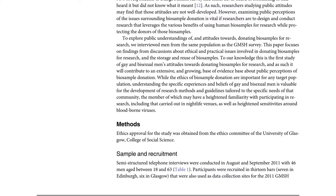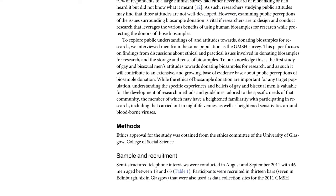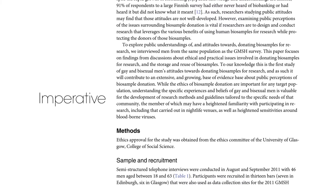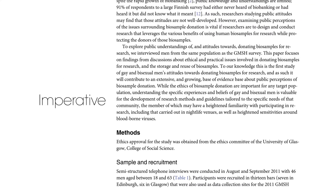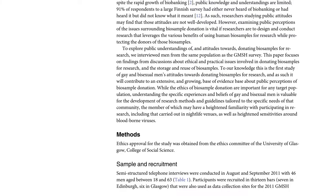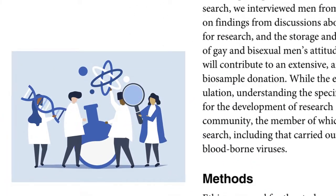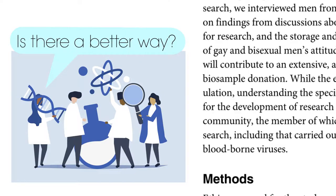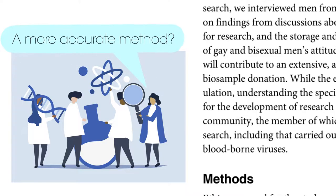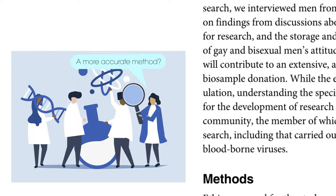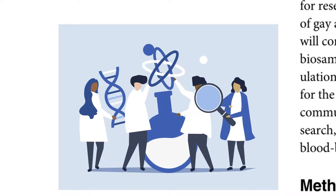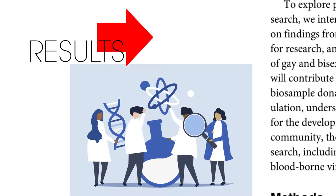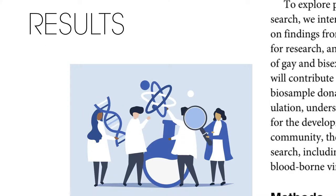The method is described in enough detail so someone could repeat the same procedure. The method is always written in the imperative, as are any instructions. It's important to allow other scientists to critique the method — for example, is there a better way the investigation could have been carried out? Could a more accurate method have been used? It also allows other scientists to carry out the experiment and compare their results. If they achieve similar results, we say the results are reproducible.